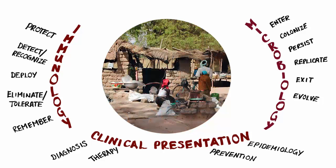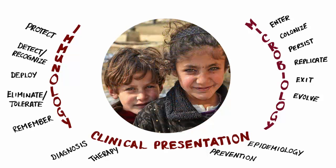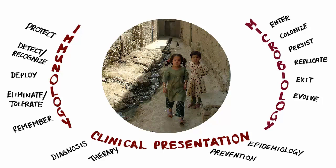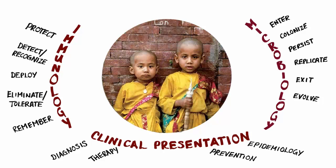In many developing parts of the world, access to resources like clean water and basic sanitation is limited, and in those same areas, higher rates of malnutrition, especially among children, often lead to immune suppression, meaning that the microbes in contaminated water can more easily infect their human hosts.